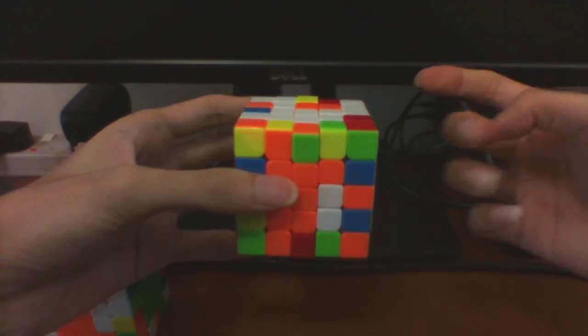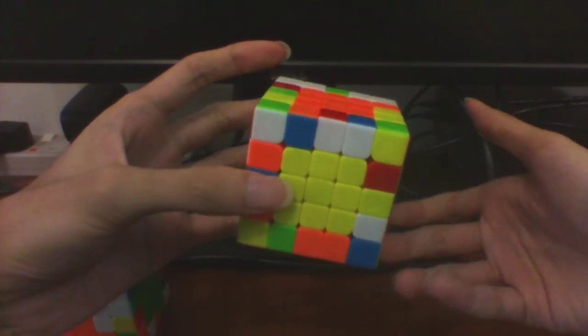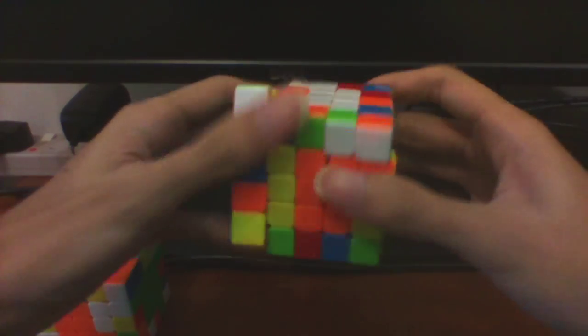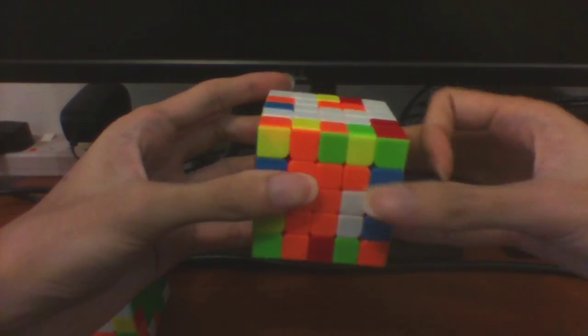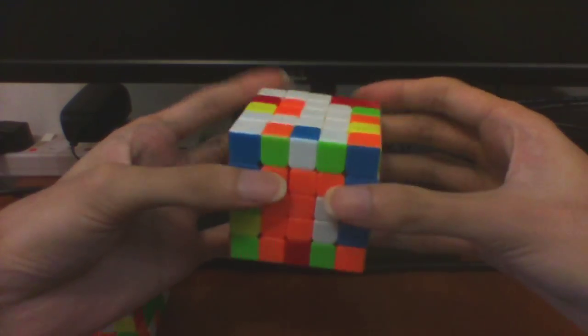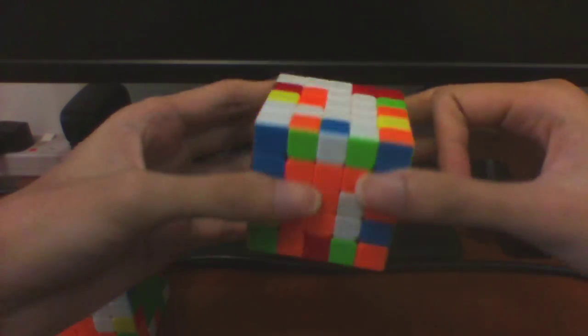So this takes a total of 6 moves, as I said earlier. 1, 2, 3, 4, 5, 6. And for this angle, we can either AUF to this one and do the 6 moves out, or AUF here and do the 7 moves out. This case is just not as good.